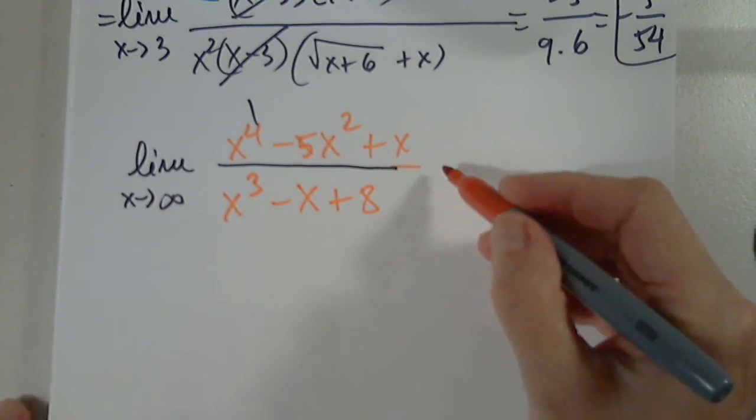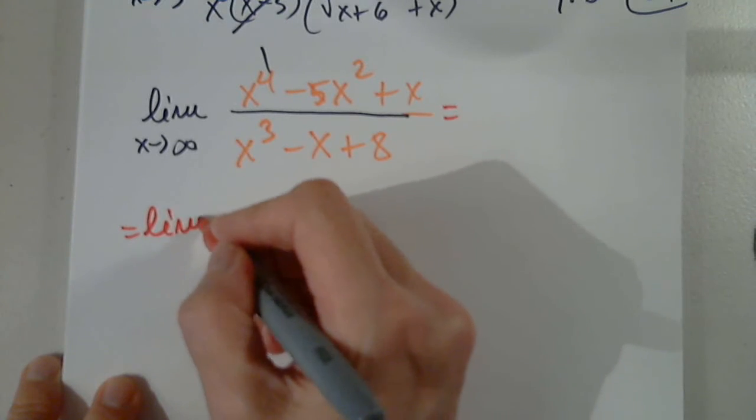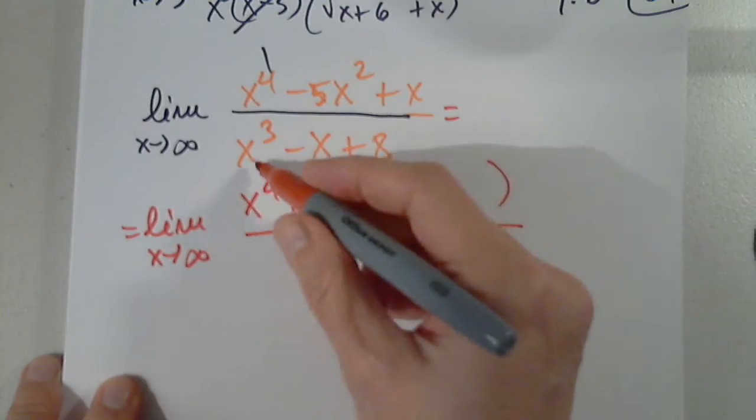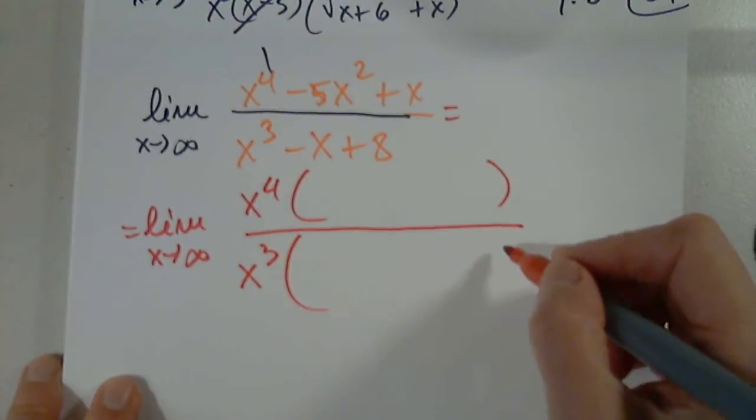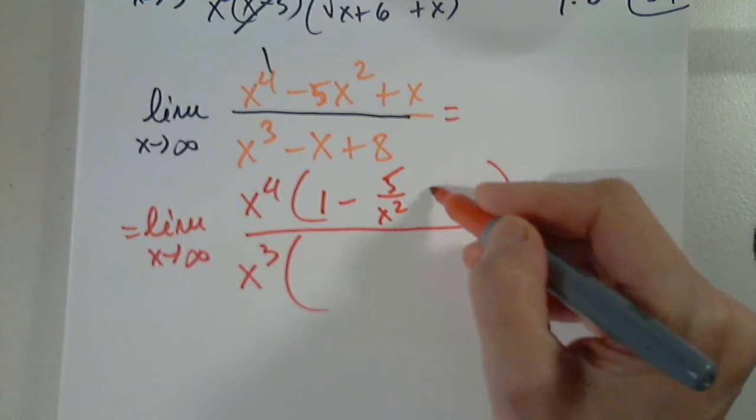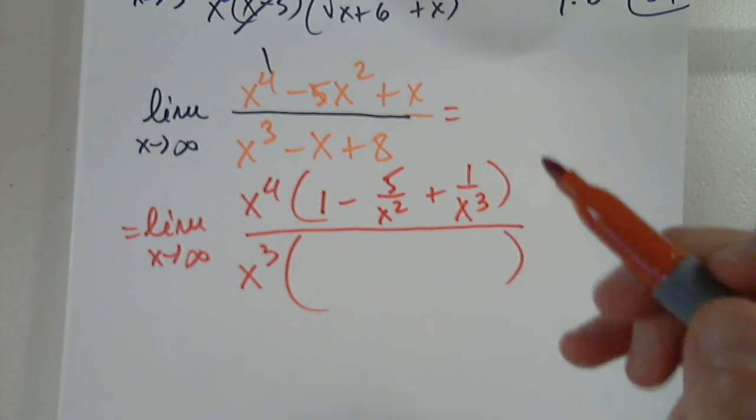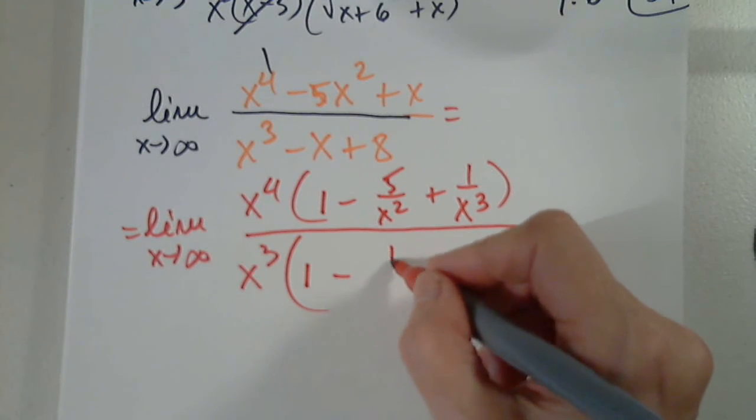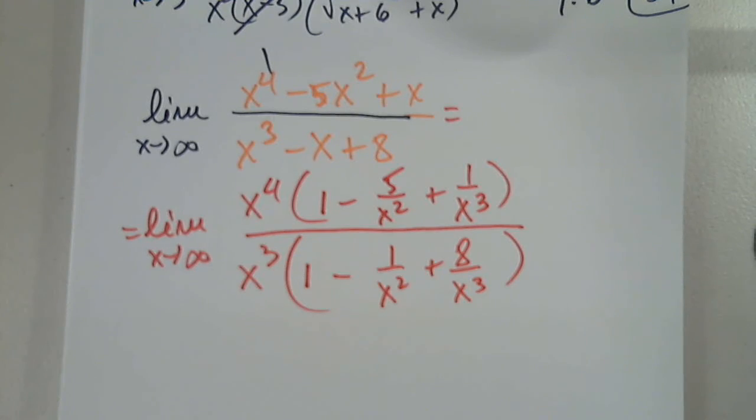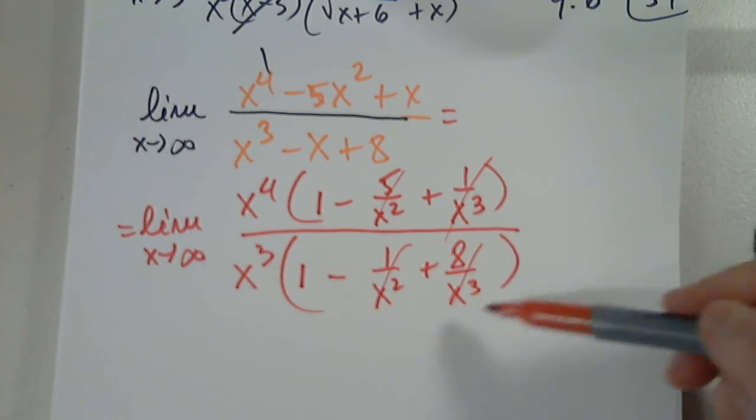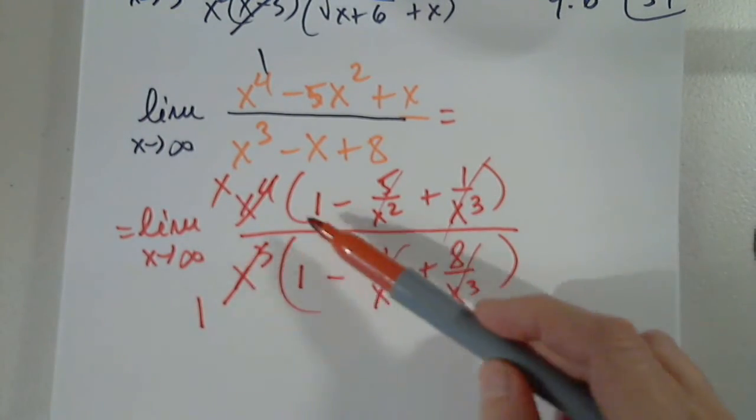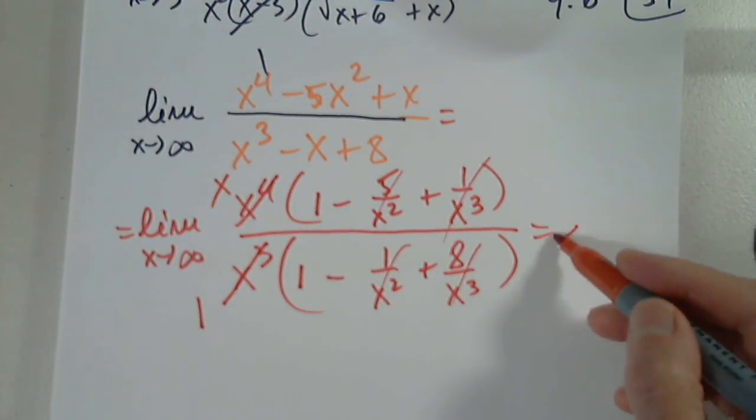x to the 4th minus 5x squared plus x over x cubed minus x plus 8. Like this? Yes. Okay. Perfect. So the degree of the top is 4. I factor out the degree. The degree of the denominator is 3, so I factor out the degree. This is 1 minus 5 over x squared plus 1 over x cubed. This is 1 minus 1 over x squared plus 8 over x cubed. These approach 0. All this approaches 1. Simplify and get an x. So x times 1 when x approaches infinity is infinity.